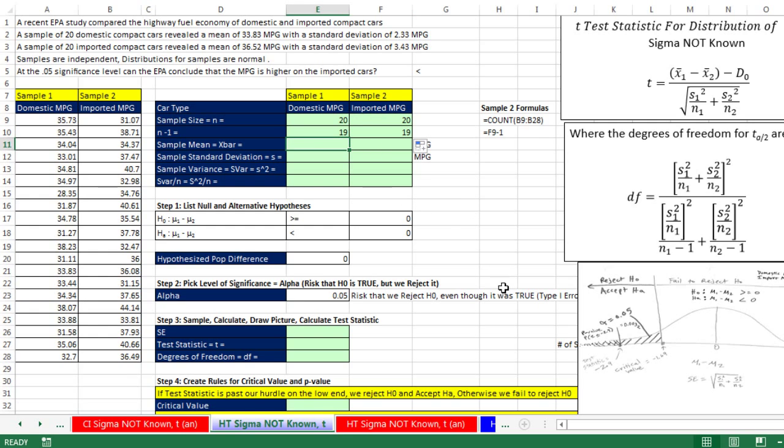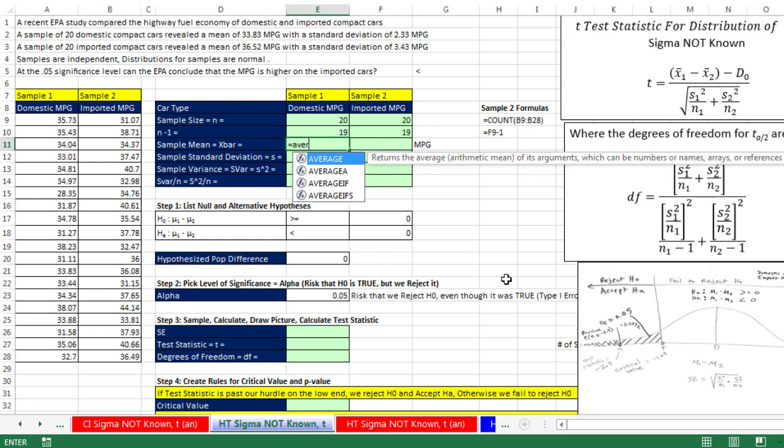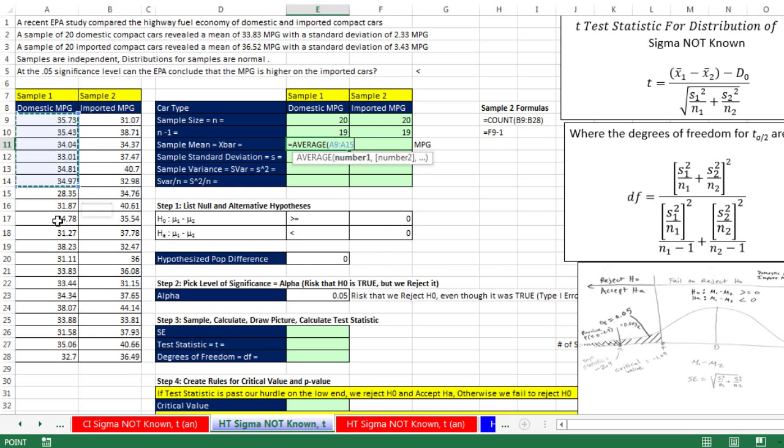The average for each one of those equals average, highlight, Control-Enter. So 33.82 miles per gallon for the domestic. And when I copy this over, F2 to check it. Sure enough, the relative cell reference is looking at the right numbers. Looks like we've got 36.52 miles per gallon. So the averages from our samples are there.